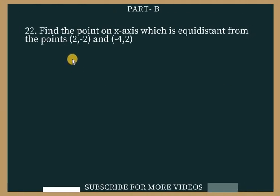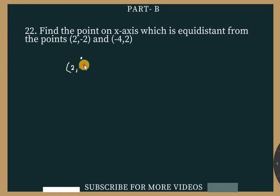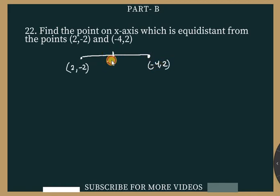Question 22 says: find the point on the x-axis which is equidistant from the point (2, -2) and (-4, 2). Let's consider one point A as (2, -2) and the other point B as (-4, 2). The point on the x-axis will be P = (x, 0).